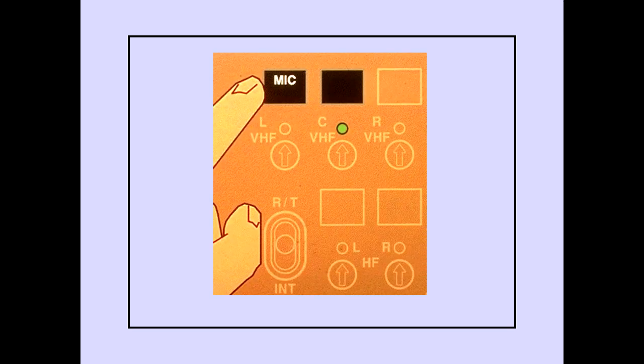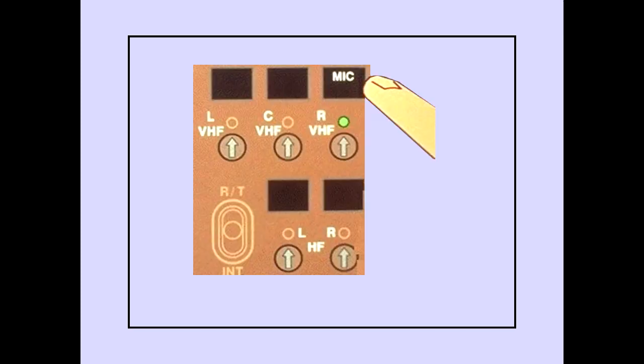Pushing a transmitter selector selects the desired transmitter. The mic indication is displayed. Selecting a transmitter also selects the respective receiver. The green receiver selected indicator does not illuminate. Only one transmitter can be selected at a time; selecting a different transmitter cancels the previous transmitter.